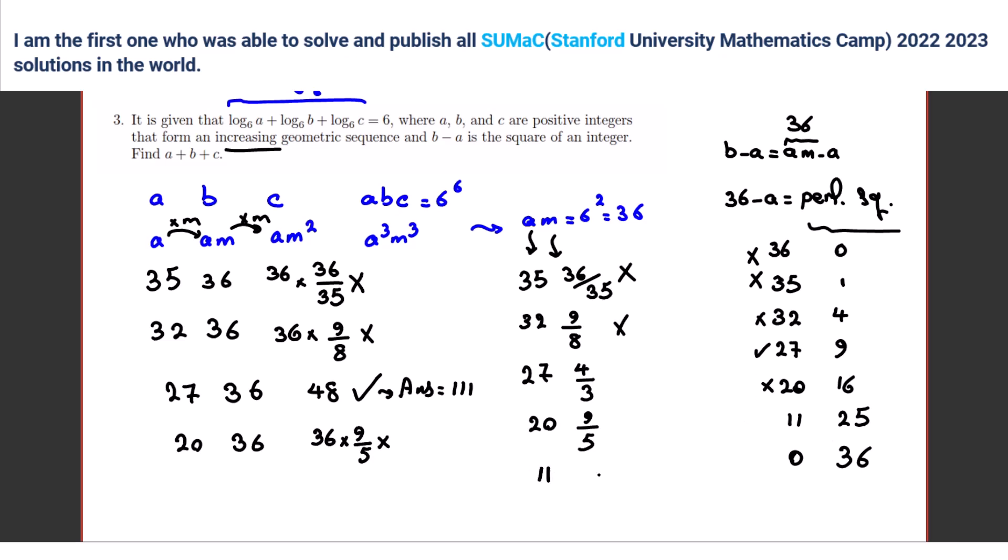nine over five yeah so 20 36 36 times nine over five is not integer right and 11 if it is 11 m is what uh then m is equal to